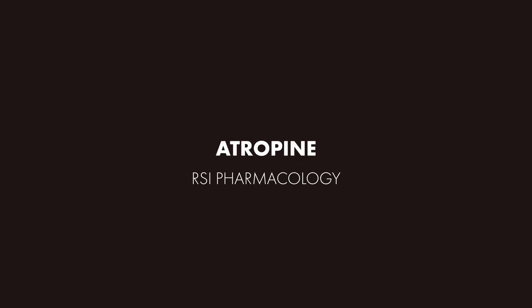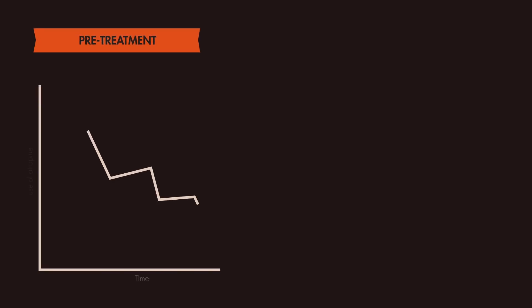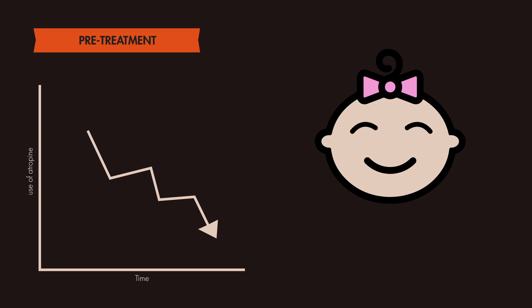Atropine is an anticholinergic agent commonly used in the emergency department for the treatment of bradycardia and organophosphate poisoning, but it may also be used as an adjunct during rapid sequence intubation in the pretreatment phase, especially in the pediatric population. Although its use in pretreatment during RSI has fallen drastically over the years, some experts still recommend considering its use in selected pediatric populations.